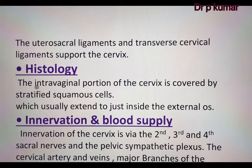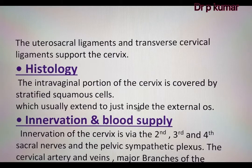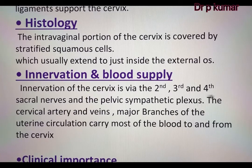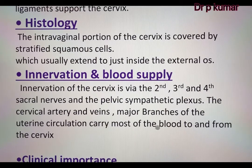Histology of cervix: The intravaginal portion of the cervix is covered by stratified squamous cells, which usually extends to just inside the external os. Innervation and blood supply: Innervation of the cervix is via the second, third and fourth sacral nerves and the pelvic sympathetic plexus. The cervical arteries and veins, major branches of the uterine circulation, carry most of the blood to and from the cervix.